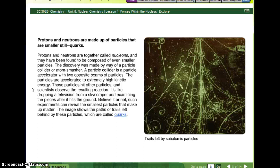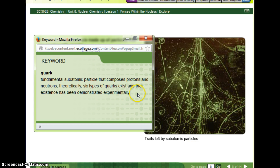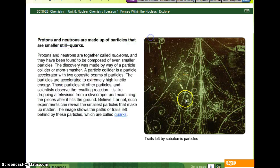So, this is kind of like the aftermath of one of these huge collisions. So, quark is, again, the fundamental subatomic particle. So, in other words, the stuff that makes up protons and neutrons. Theoretically, six types of quarks exist, and their existence has been demonstrated experimentally, which is what they showed here.